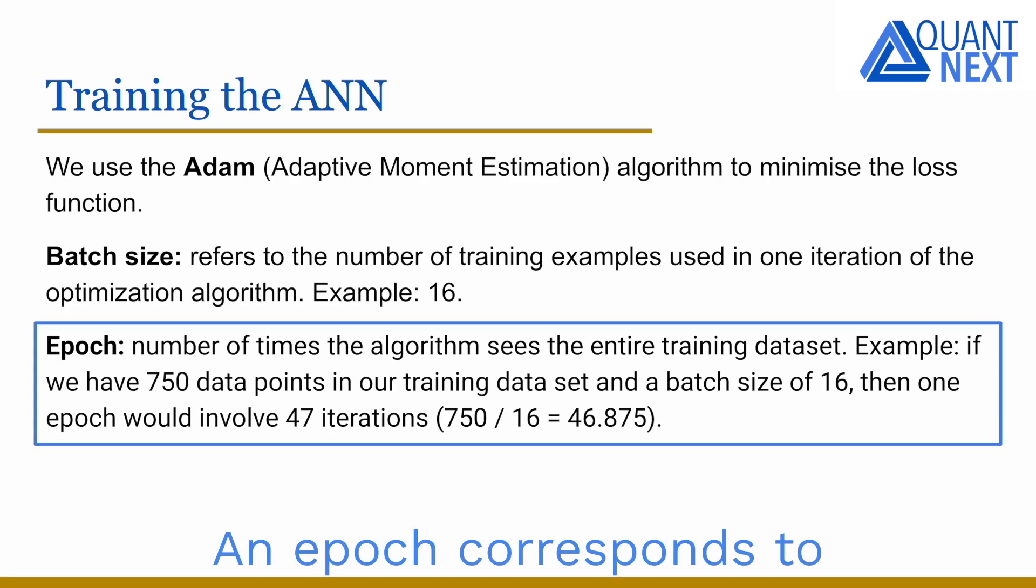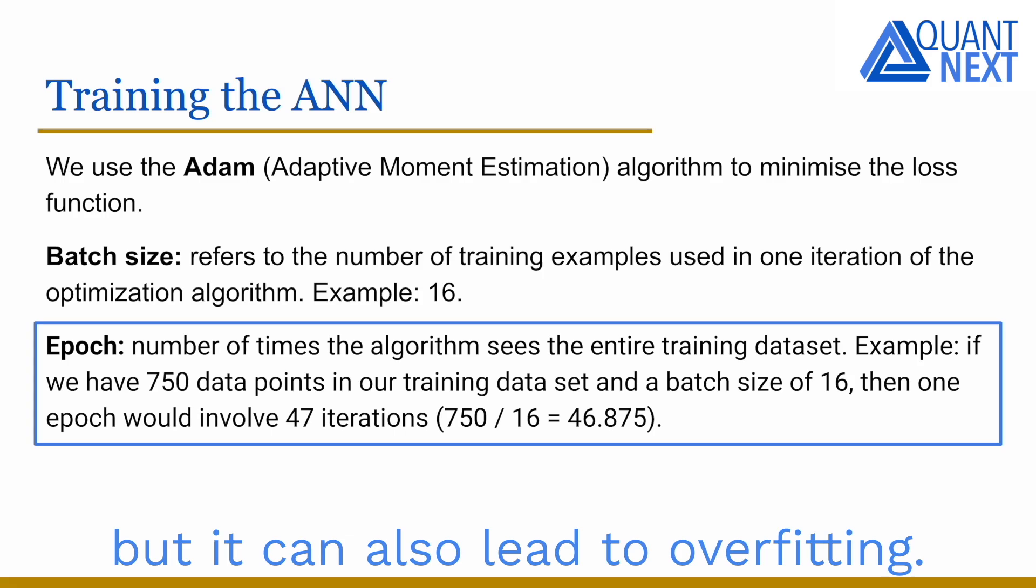An epoch corresponds to the number of times the algorithm sees the entire training dataset. For example, if we have 750 data points in our training dataset and a batch size of 16, then one epoch would involve 47 iterations. Training more epochs can improve the accuracy of the model but it can also lead to overfitting, so it is important to find a good balance.